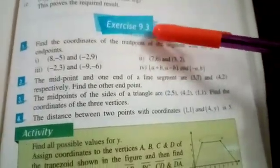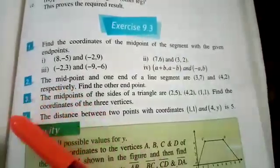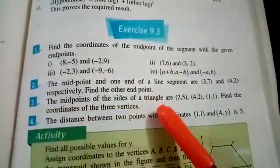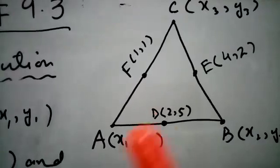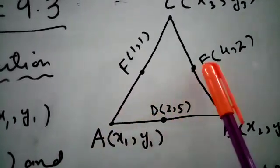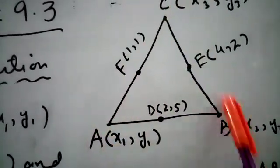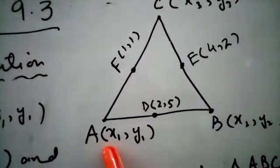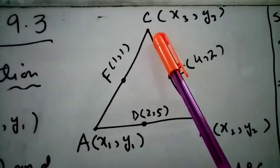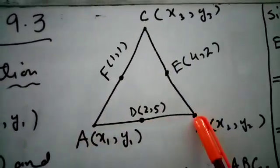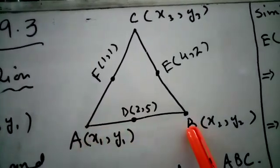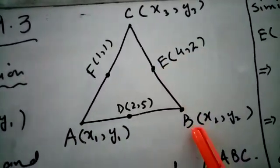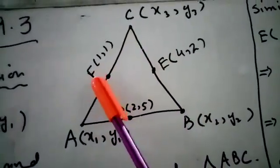Bismillahirrahmanirrahim. Dear students, Exercise 9.3 question number 3: the midpoints of the sides of a triangle are (2,5), (4,2), and (1,1). Find the coordinates of the three vertices. First we will draw a triangle where the midpoints are (2,5), (4,2), and (1,1). Let D(2,5) be the midpoint of side AB, E(4,2) be the midpoint of side BC, and F(1,1) be the midpoint of side AC.